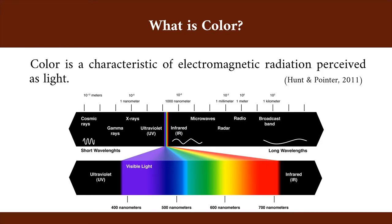Color is a property of light, which is what we call electromagnetic radiation within the visible spectrum. The visible spectrum is particular to a species, and the one shown here is the human visible spectrum, but other animals can see more or less than that.